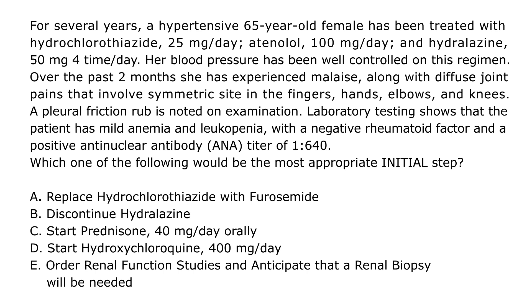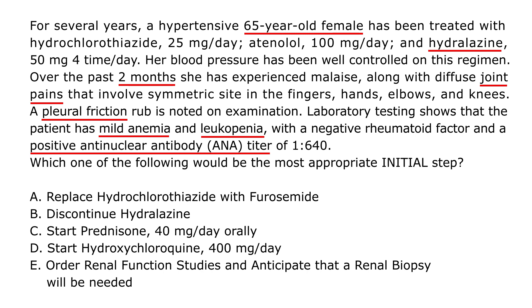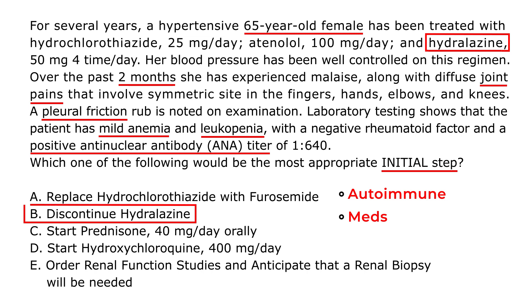Final question: A hypertensive 65-year-old female has been treated with hydrochlorothiazide, atenolol, and hydralazine for several years with well-controlled blood pressure. Over the past two months she has experienced malaise, diffuse symmetric joint pains in the fingers, hands, elbows, and knees, and a pleural friction rub on exam. Labs show mild anemia, leukopenia, negative rheumatoid factor, and positive ANA. While most lupus is autoimmune, a small percentage of lupus-like symptoms can occur from medications such as hydralazine. Therefore, the most appropriate initial step is to discontinue the hydralazine, which should hopefully lead to resolution of symptoms.